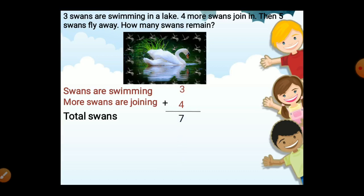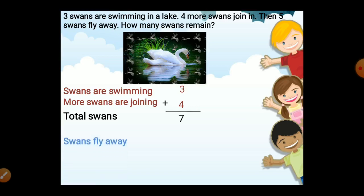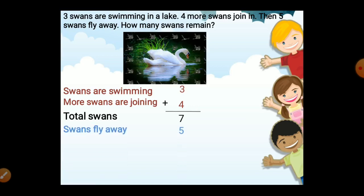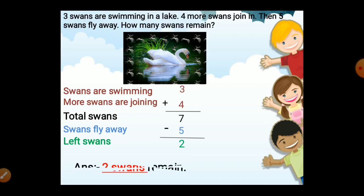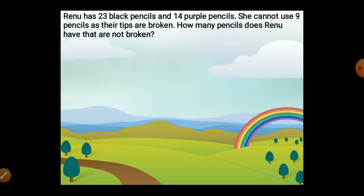Then five swans fly away, so you have to subtract five from seven. Seven minus five is two. Our answer is two swans remain.